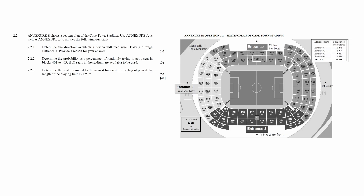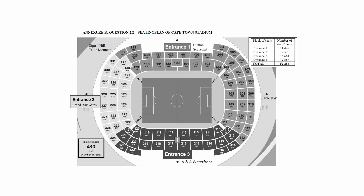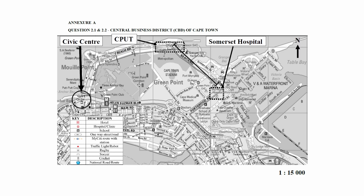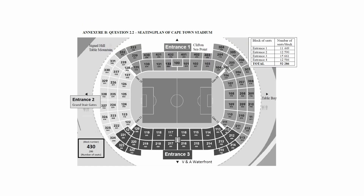Question 2.2 consists of two maps and plans questions and one probability question designed to assess your understanding of seating plans. You are given a diagram in Annexure B that shows a seating plan of Cape Town Stadium. You have to use Annexure A as well as Annexure B to answer the questions that follow.